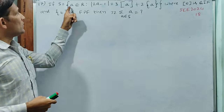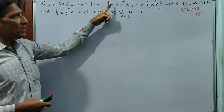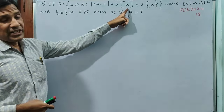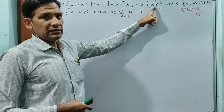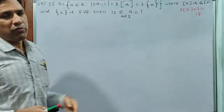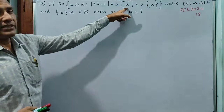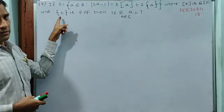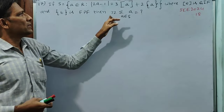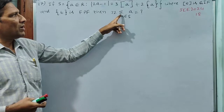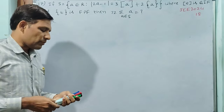If S is equal to the set of a belonging to the real numbers such that the modulus of 2a minus 1 is equal to 3 times the greatest integer of a, plus 2 times the fractional part of a — where [t] is the greatest integer function and {t} is the fractional part function — then 72 times sigma over a belonging to S of a is equal to how much? The answer 18 has to come; let us see how.